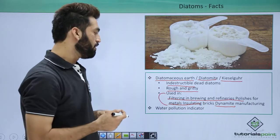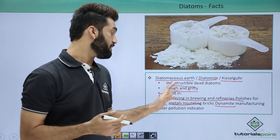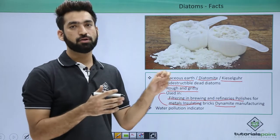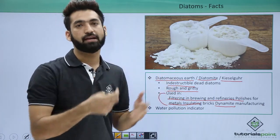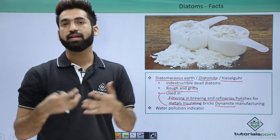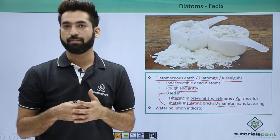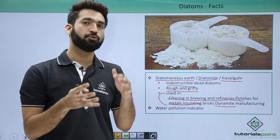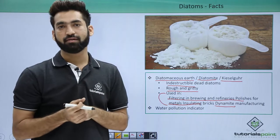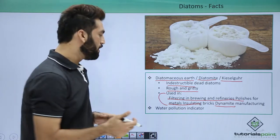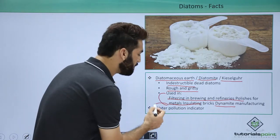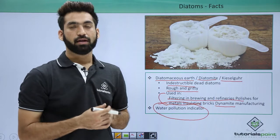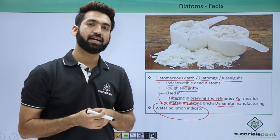Diatomaceous earth is also added into paint so that paints increase their visibility at night. We also add it into toothpaste so that the toothpaste will have a gritty nature.